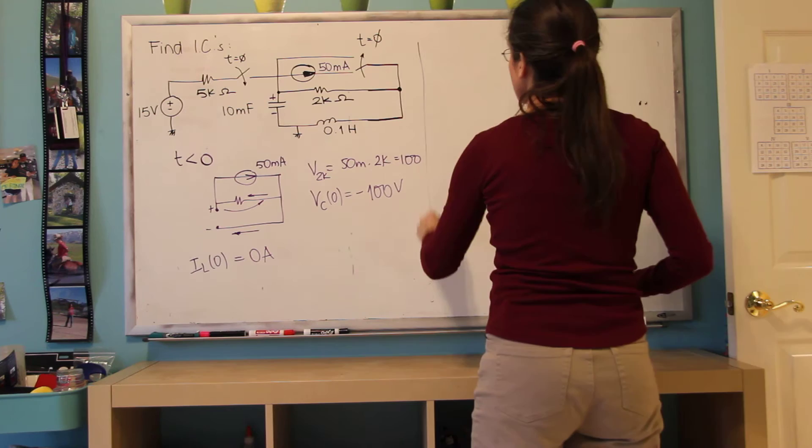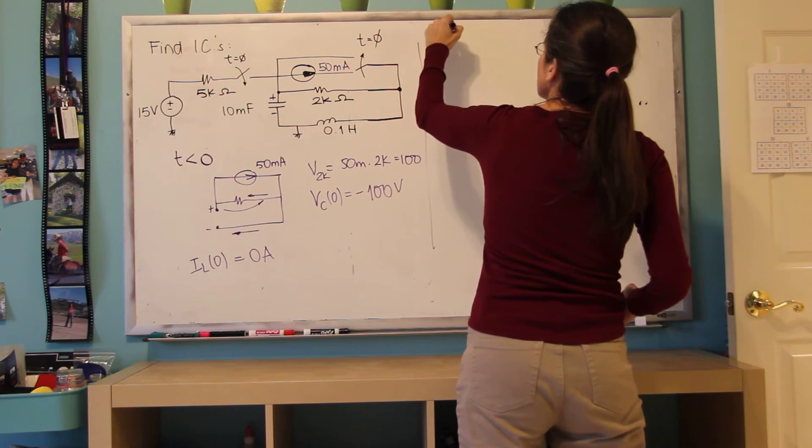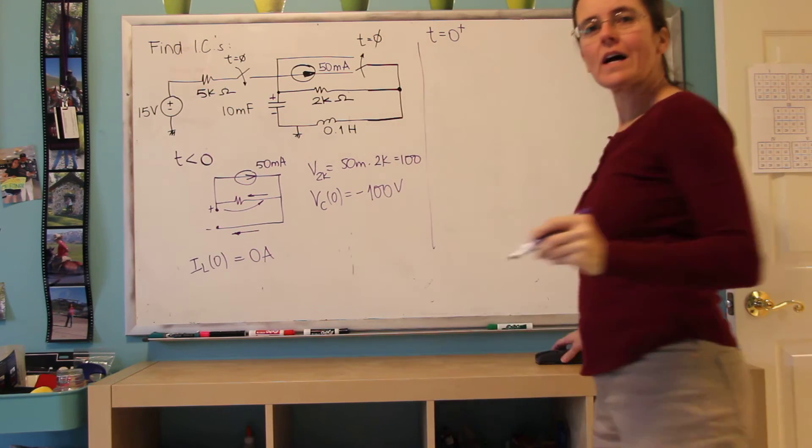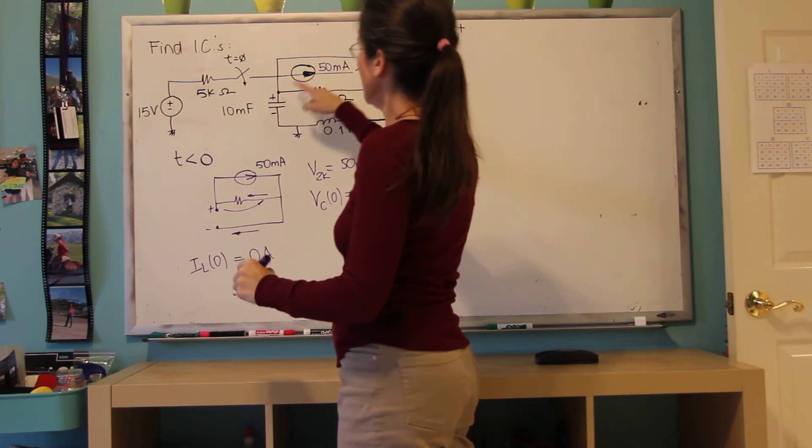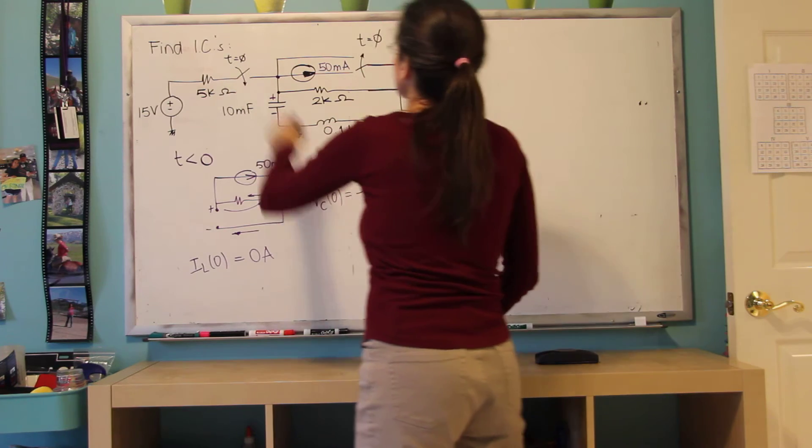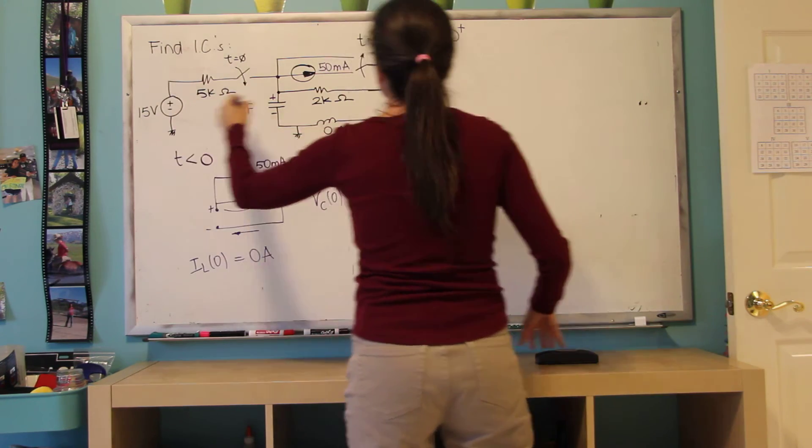This is at zero. And now we're interested in the circuit at zero plus, which is right after the two switches actuated. So this one went to this short. And this one closed. So now we do have this part of the circuit.